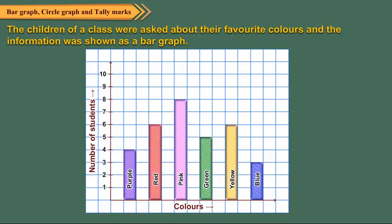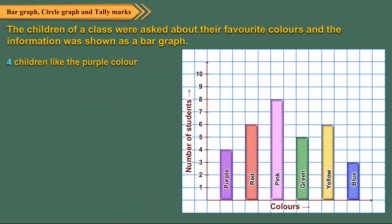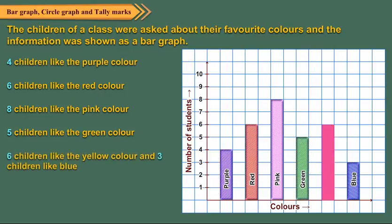From the bar graph we see that four children like the purple color, six children like the red color, eight children like the pink color, five children like the green color, six children like the yellow color, and three children like blue. It means there are 32 students in the class.